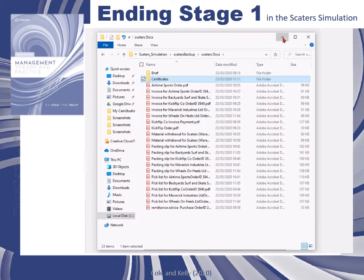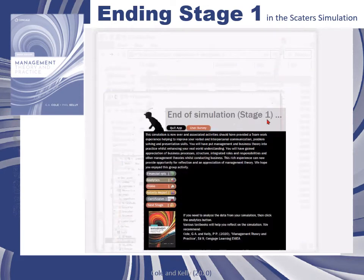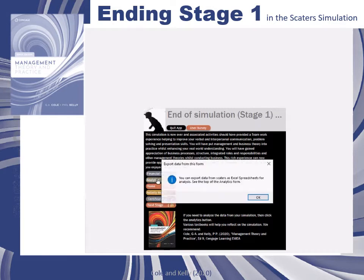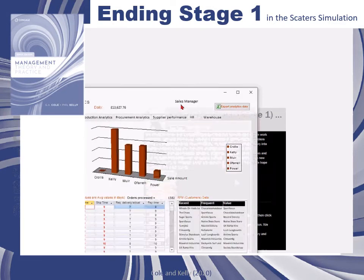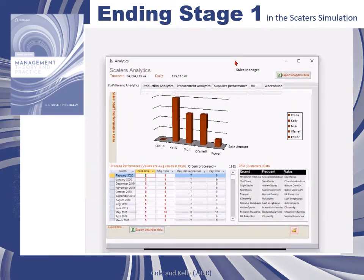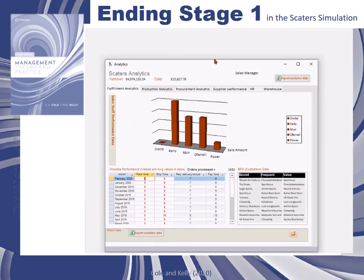Before you commence your analysis, you will need to download all of the data for stage one. You do this by clicking on the analytics button and the analytics form will load. From the analytics form in the top right-hand corner, you can see a button 'Export Analytics Data' and you'll need to press this in a little while.